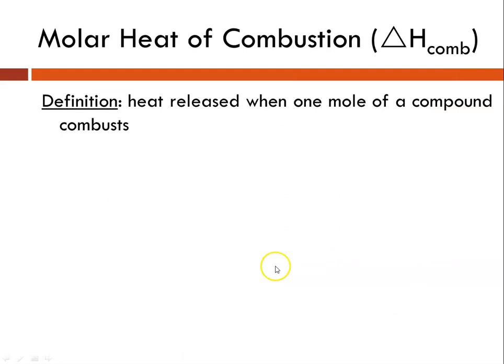Now we can talk about the molar heat of combustion, which is delta H subscript comb for combustion. The definition is the heat released when one mole of a compound combusts or undergoes combustion. We've got to remember that heat is released when something undergoes a combustion reaction. The reason we burn stuff is because energy is released. We don't light a fire in our fireplace because it makes us cold—it releases energy. So remember that combustion is going to be exothermic.